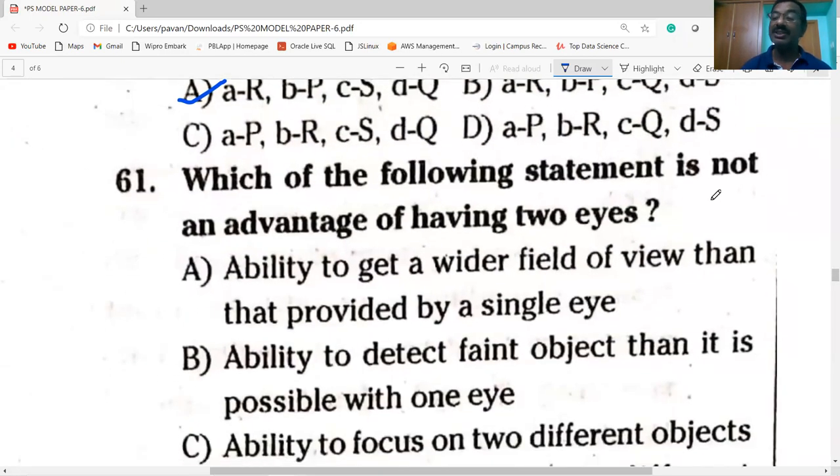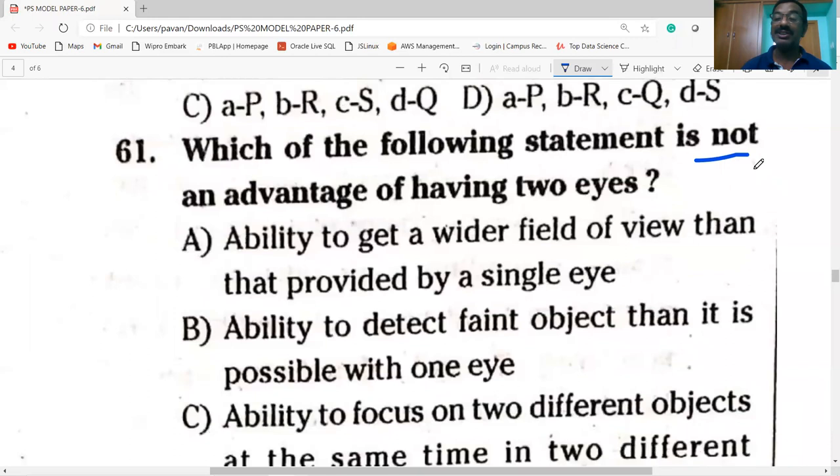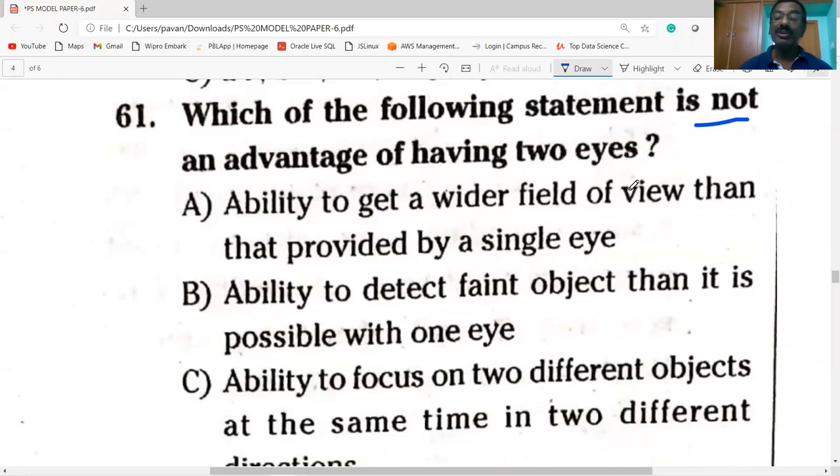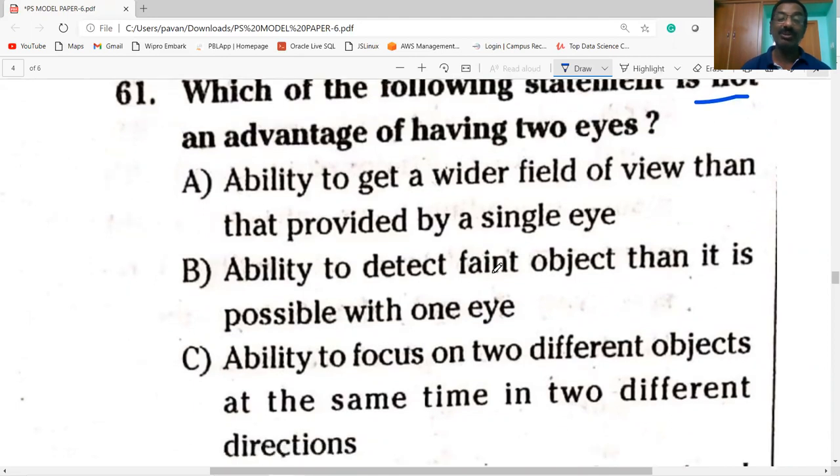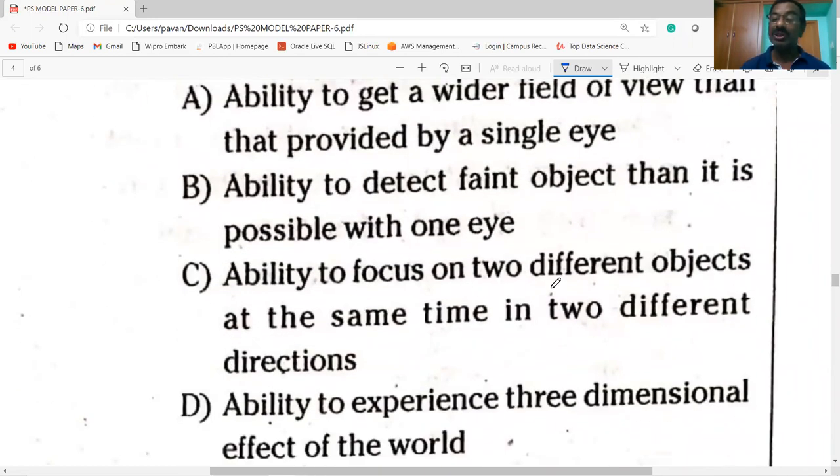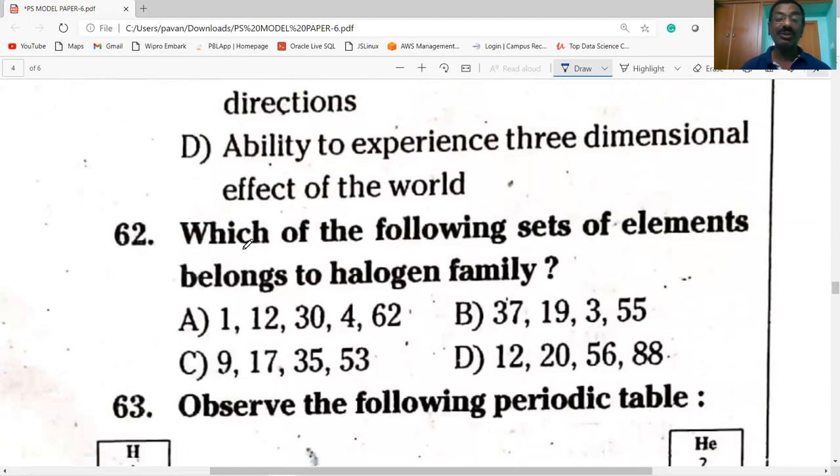Which of the following statement is not an advantage of having two eyes? Ability to get a wider field of view is an advantage. The ability to detect faint objects is also an advantage of two eyes. But ability to focus on two different objects at the same time in two different directions is not an advantage of having two eyes.